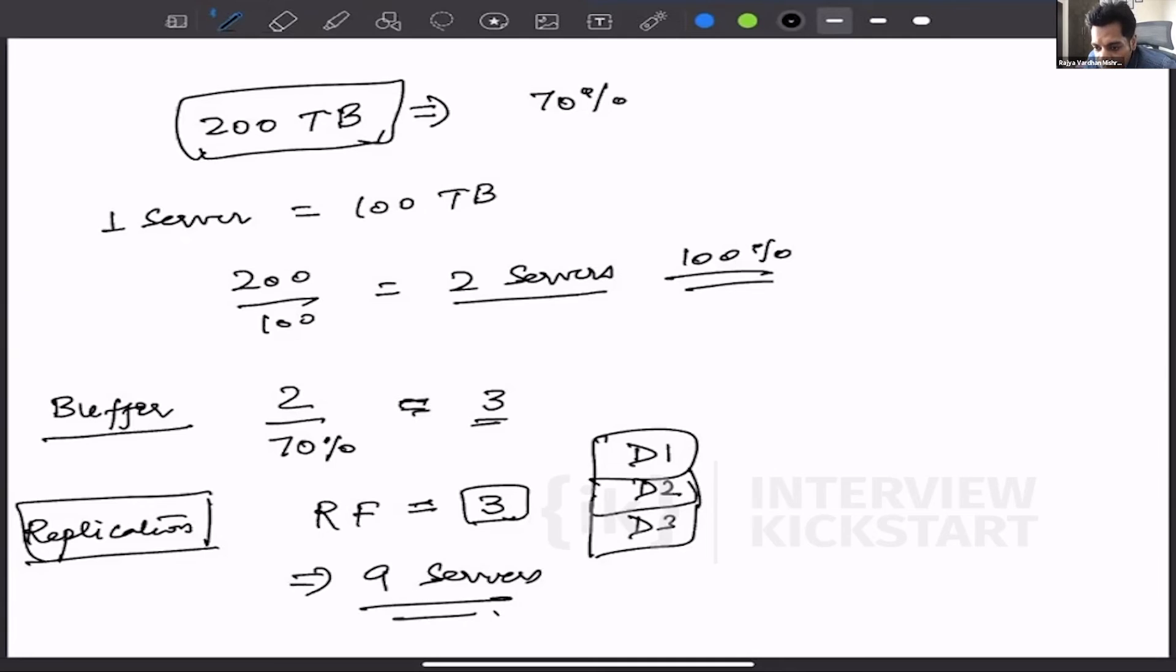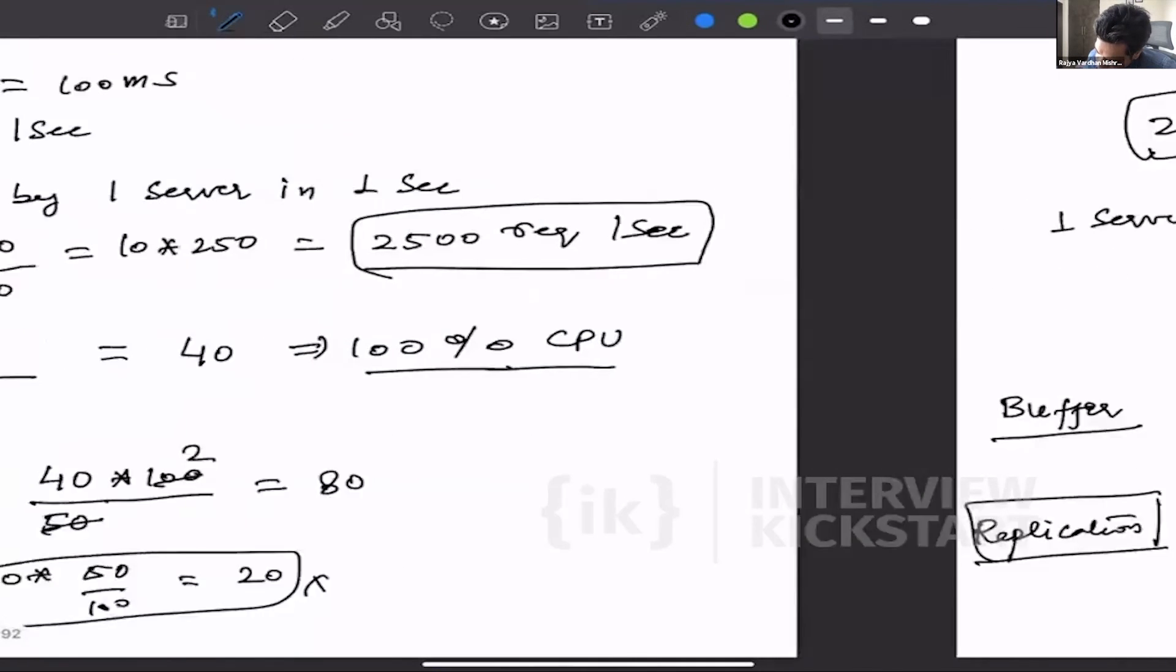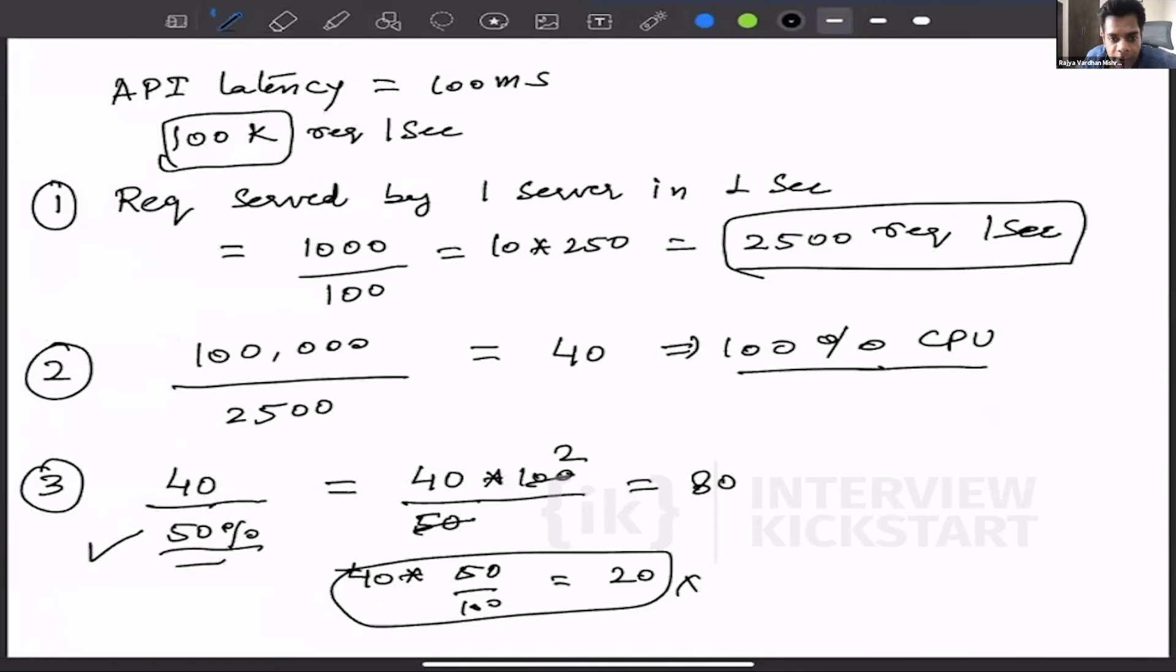There was a question on explaining the previous calculations again, so I'll do that. We know that the latency of one API is 100 milliseconds. This is what we have established with the interviewer. And the second thing we have established is that 100,000 requests per second are coming to our system. So the first step is we have to identify how many requests will be served by one server in one second. Once we have this number, then we can just extrapolate it.